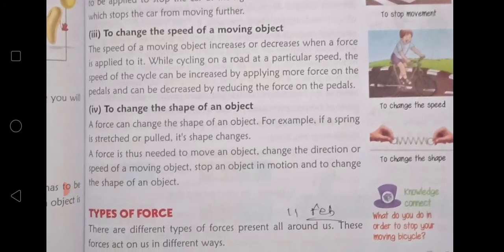Third: to change the speed of a moving object — کسی بھی moving object کی speed کو change کرنا۔ The speed of a moving object can increase or decrease when a force is applied to it. While cycling on the road, the speed of a cycle can be increased by applying more force on the pedals and decreased by reducing the force on the pedals — جیادہ force لگانے سے speed بڑھ جاتی ہے اور کم force لگانے سے speed گھٹ جاتی ہے۔